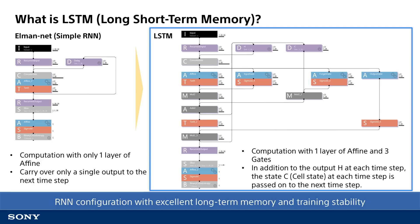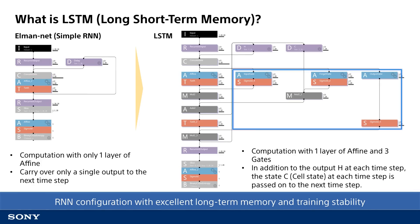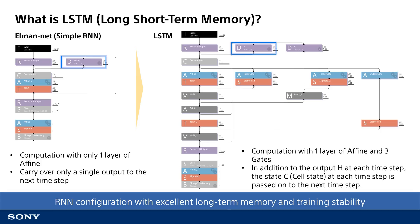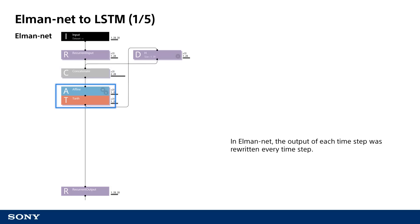Once you know it, it's not so complicated, so you don't have to worry about it. One change from Elman net is that LSTM has three additional gates in addition to affine and tanh which were also in Elman net. In Elman net, only the hidden state of each computation result is carried over to the next time step, but in LSTM, in addition to this, information called cell state is carried over to the next time step. To explain the structure of LSTM, I would like to build it up little by little from the structure of Elman net. Elman net combines the output of the previous time step with the input of each time step, performs linear transformation and applies activation function with affine and tanh, and then passes the result on to the next time step.